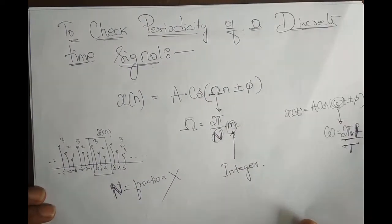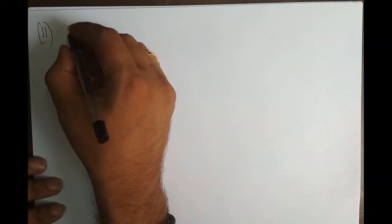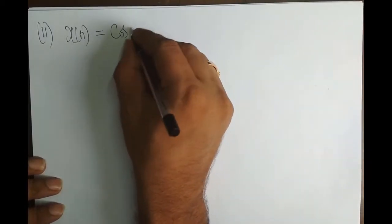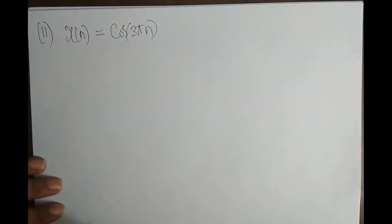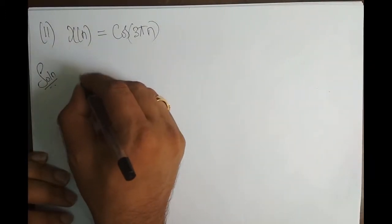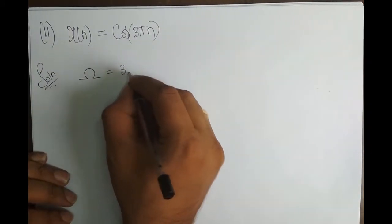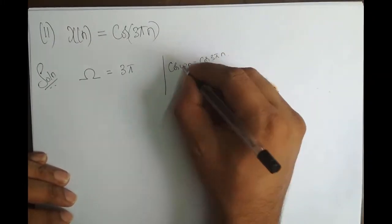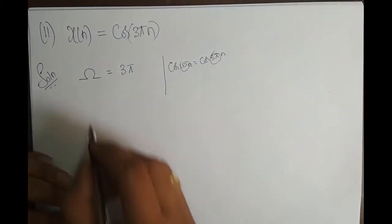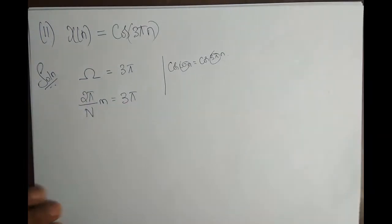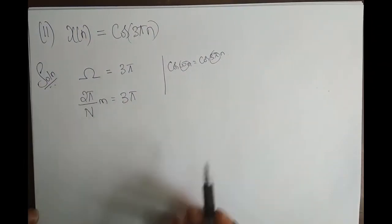The approach is to equate our omega formula to the given problem's omega and solve for capital N. We will take up a few problems, continuing with problem number 11. x of n is equal to cos of 3 pi n. So what is omega here? Since it is of the form cos of omega n equals cos of 3 pi n, omega is 3 pi. Setting omega equal to 2 pi M by capital N gives us 2 pi M by N equals 3 pi.